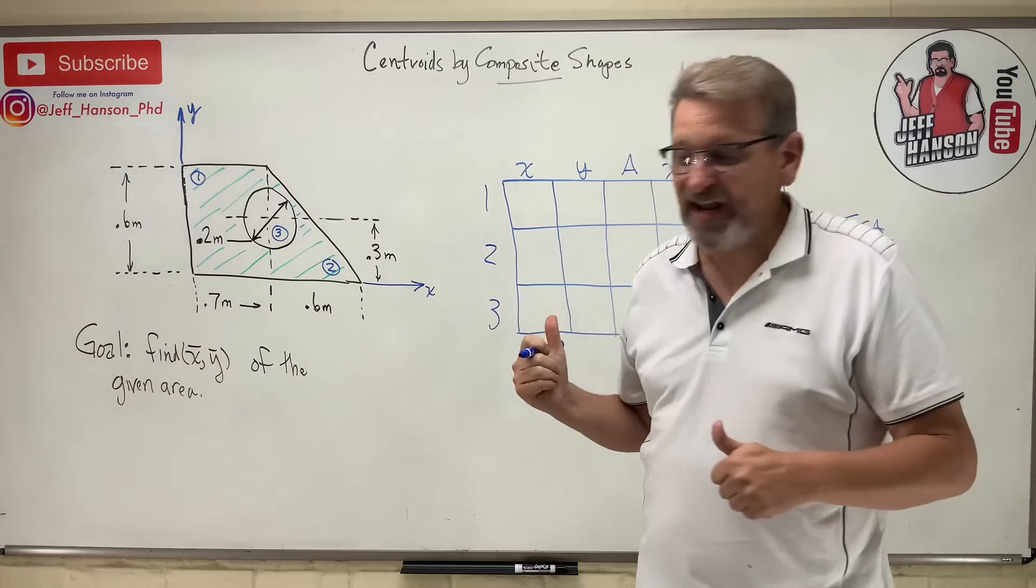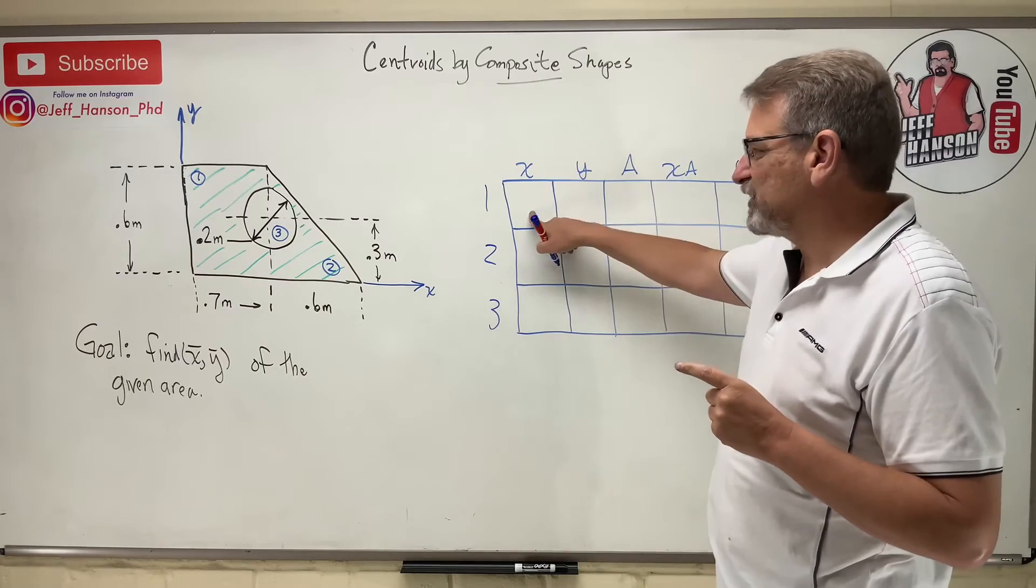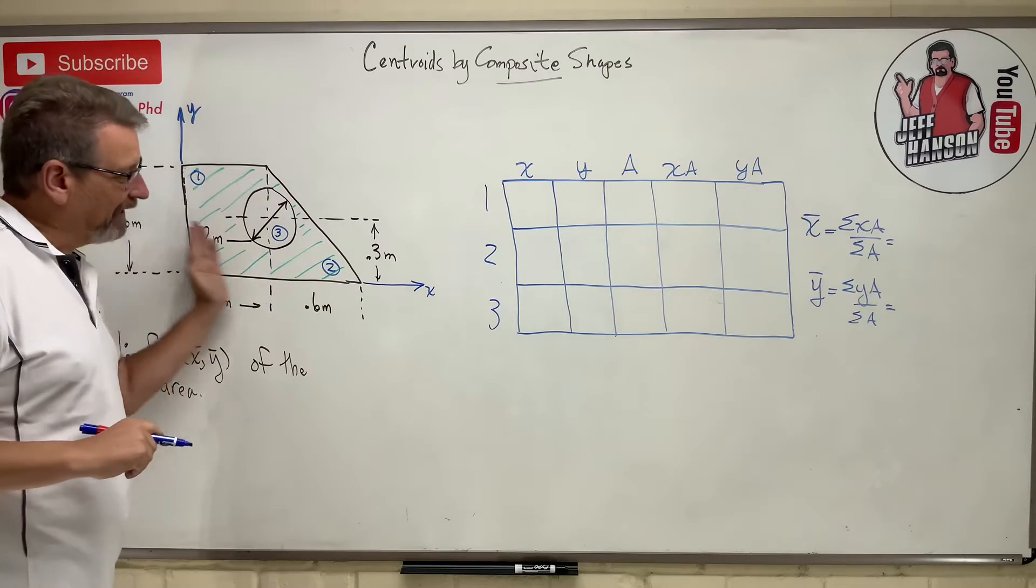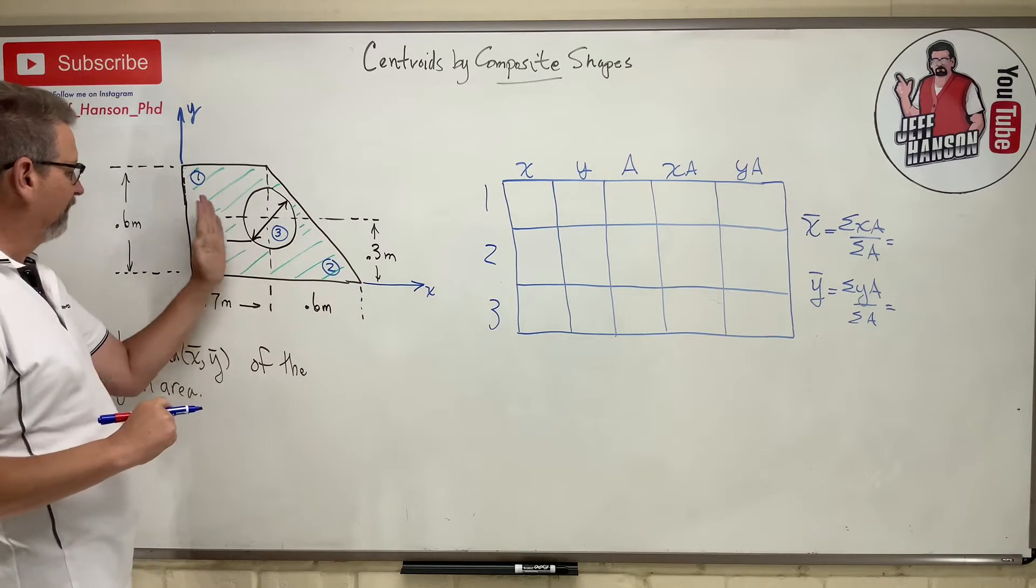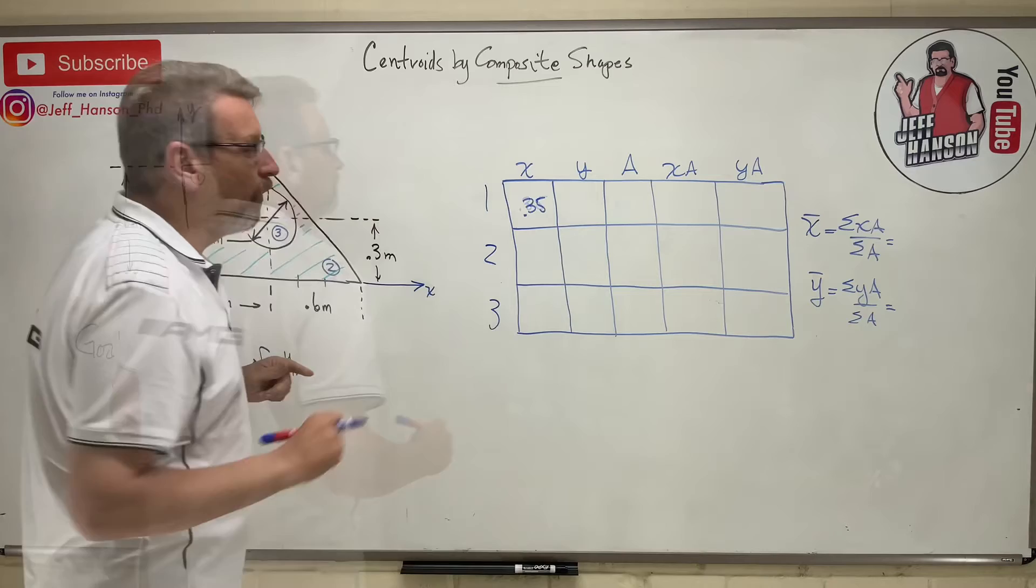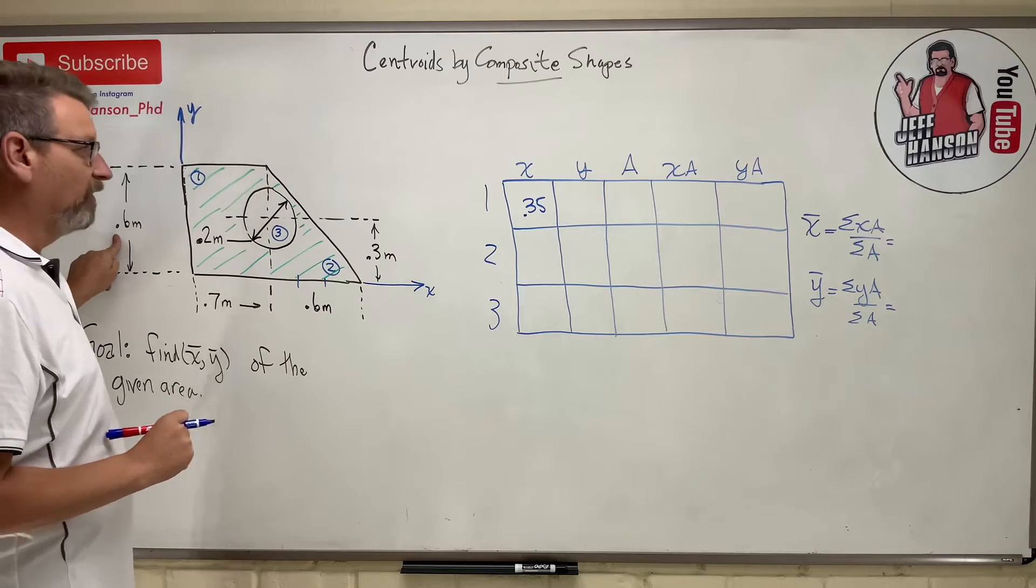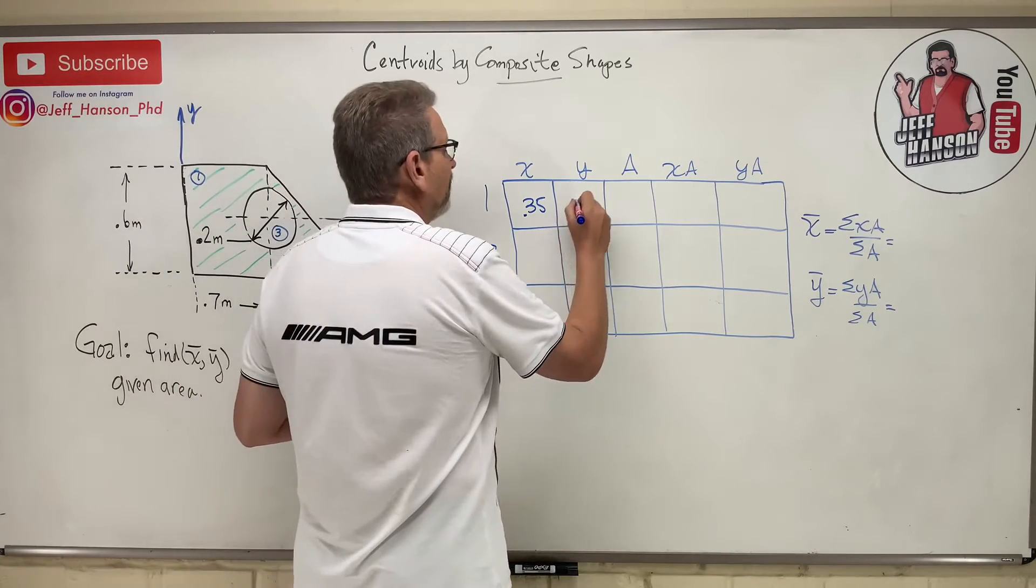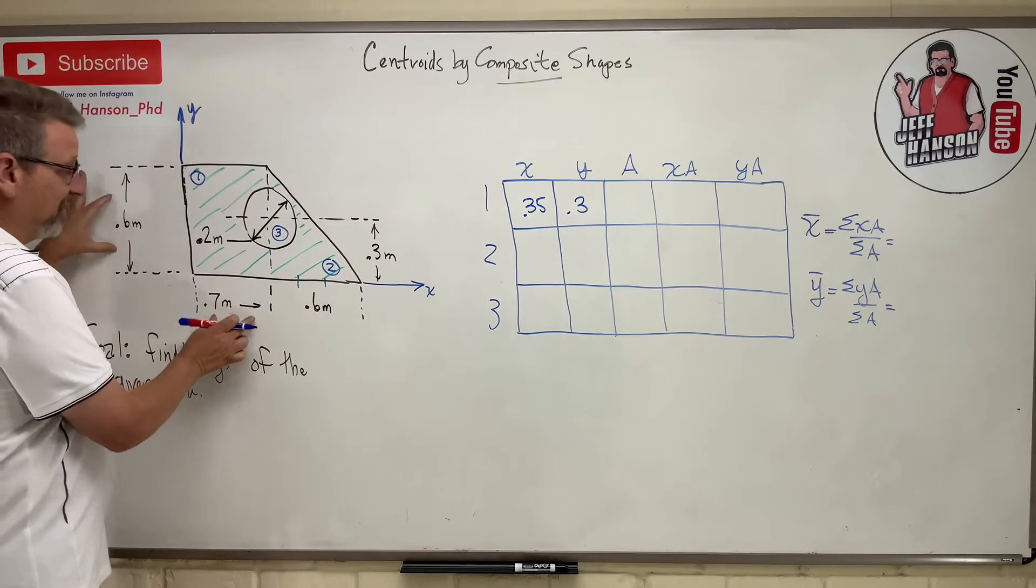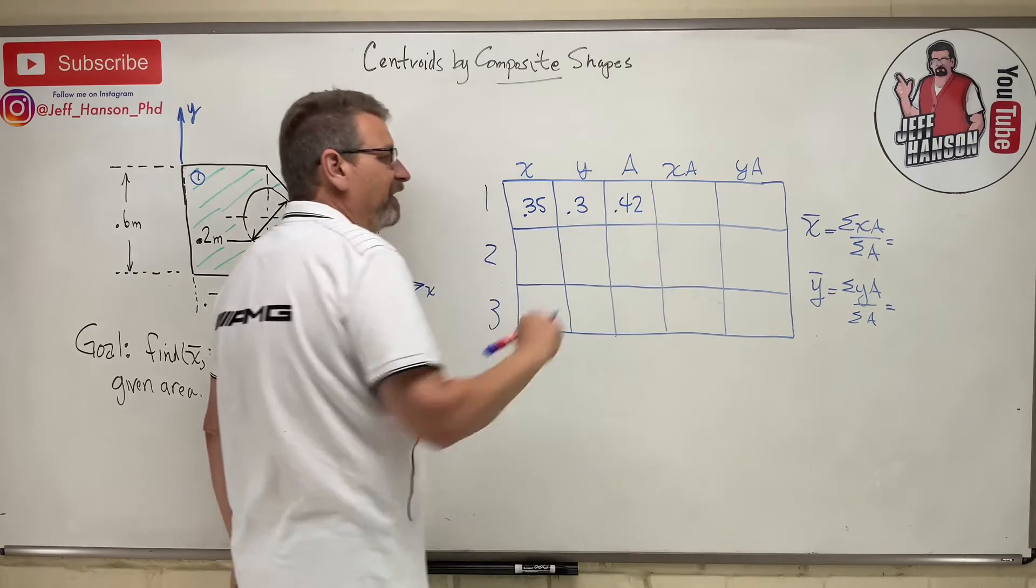Y bar is equal to the sum of the Y·A's over the sum of the A's, so we'll get this information from our table. Let's go shape number one. Shape number one, where is X bar? So shape number one is a rectangle, so we're just half the rectangle. Just move your hand in the X direction - where? Yeah, it's half of 0.7, which is 0.35. And a Y bar for piece number one, so in the Y direction where is piece number one? It's half of 0.6, which is 0.3. And then the area: 0.7 times 0.6, which is 0.42.